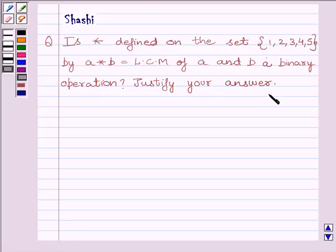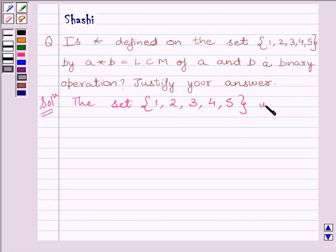Let us start with the solution now. The set {1, 2, 3, 4, 5} is defined by A star B equals LCM of A and B.